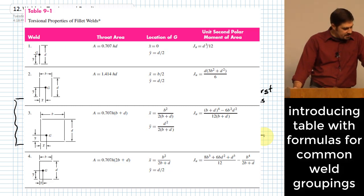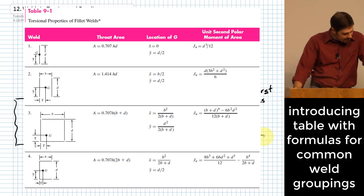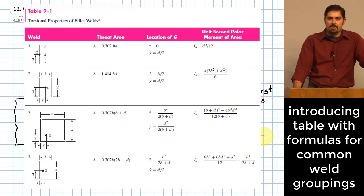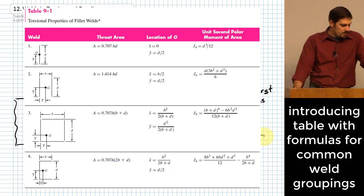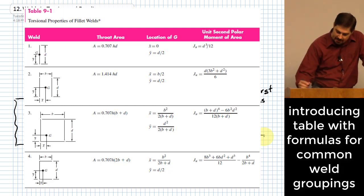One of the things you'll notice in Table 9-1 is we have a few different types of weld groups. Which one most closely relates to the situation we have here? Entry 3 in that table seems to be the best one — it's an L shape. We look at entry 3, and the X and Y centroid equations are actually given there. Those are fairly easy to re-derive; it's just a plain old centroid calculation based on the rectangles. Since it's nothing fancy, we may as well go ahead and use that information. So we'll start by finding the centroid.